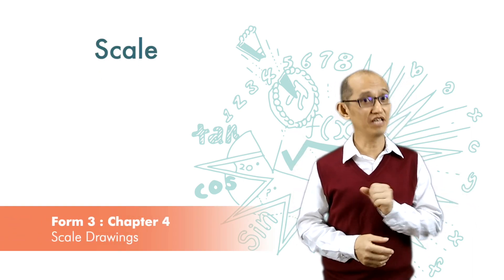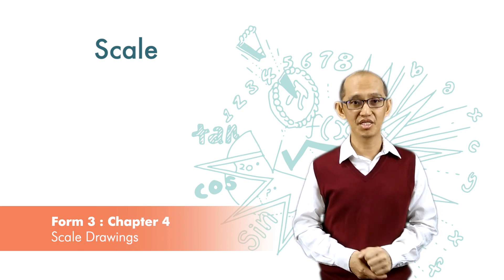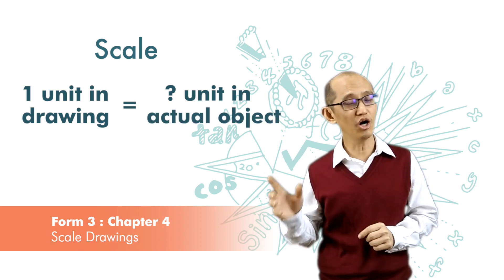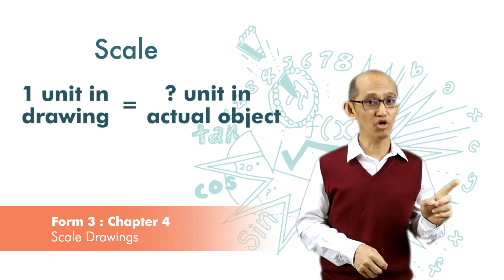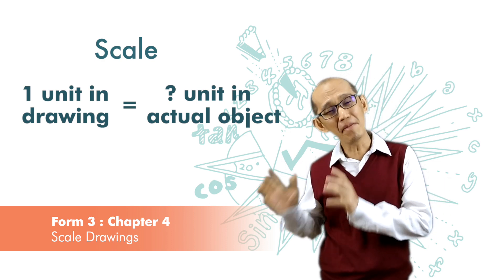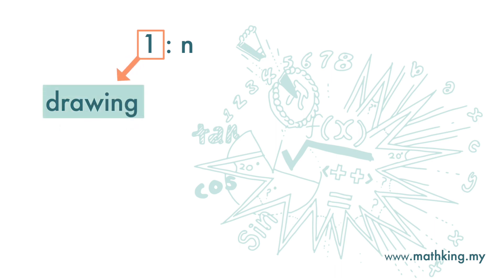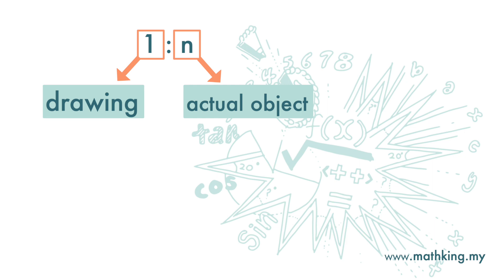Next, we'll look at the scale in the scale drawing. The scale will tell us one unit of the drawing represents how many units of the actual object — one unit of the drawing represents how much of the real world. Scale drawing is always written as 1 to n. The portion in front is always 1, and the 1 in the front portion of the ratio represents 1 unit in the drawing. The n at the back tells us the number of units of the object in the real world.